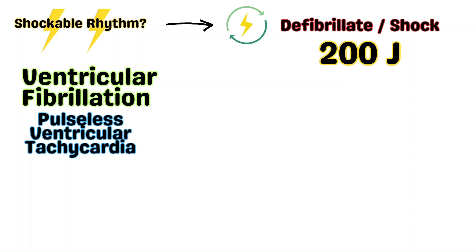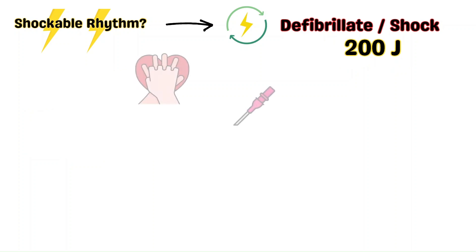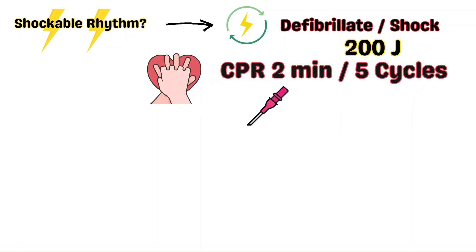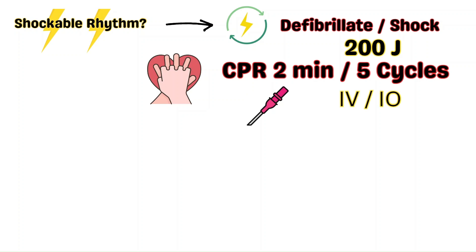However, in cardiac arrest situations I have participated in, the maximum of 200 joules has always been used. After defibrillation, immediately resume CPR for two minutes. You don't check the rhythm immediately after defibrillation because even if it converts back to normal sinus rhythm, it takes time for contractions to be effective again.